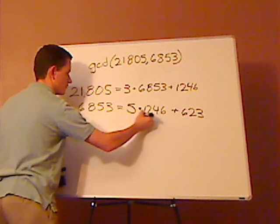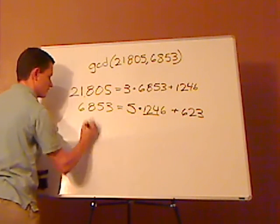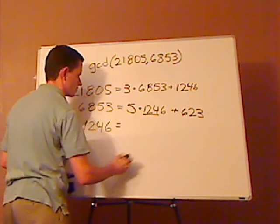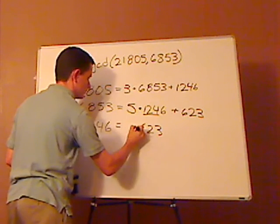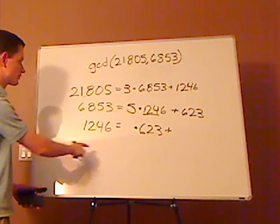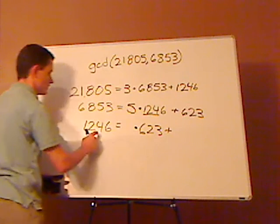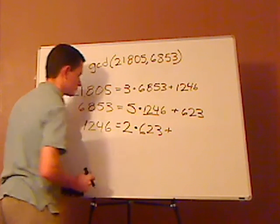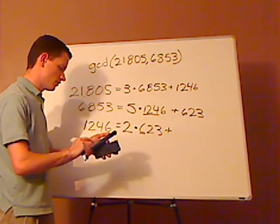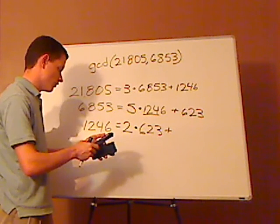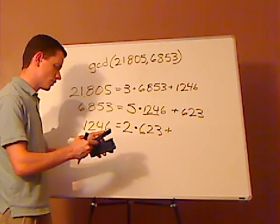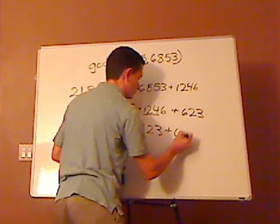So what we're going to do is, again, do the same thing. Take this number, shift it, put it over on this side, so that would be 1,246 equals 623 times some number, plus a remainder. I think it looks like this number goes into it evenly twice. So let's do that and check the remainder. 1,246 minus 2 times 623, and that's 0. So you're done using the Euclidean algorithm.